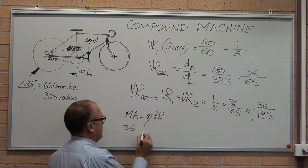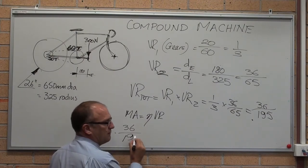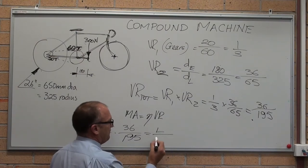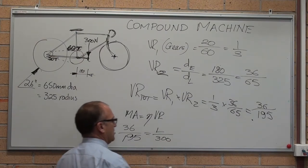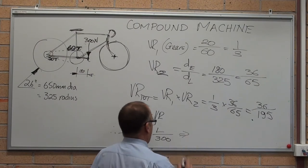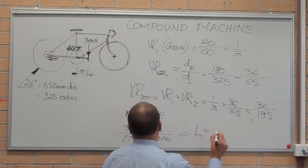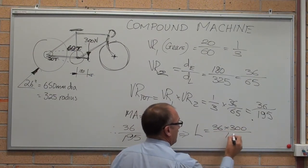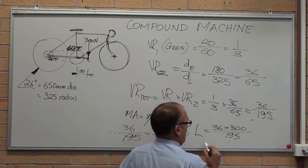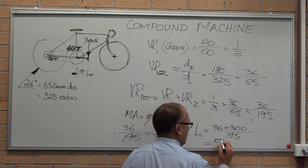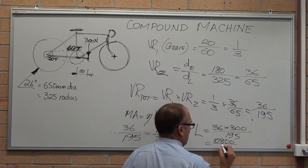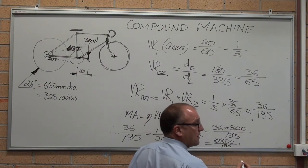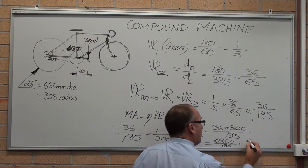36 on 195 was the velocity ratio, equals load on effort, which was 300 newtons. The load on the other end equals 36 times 300, divided by 195, equals 36 times 3 is 108, 195, and the calculator says that that is 55.4 newtons.